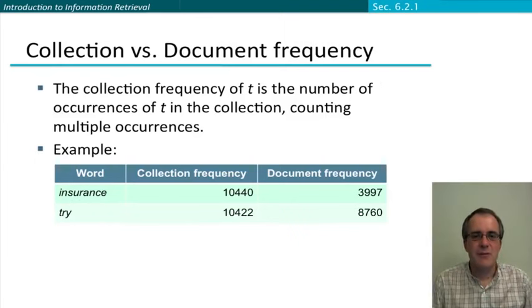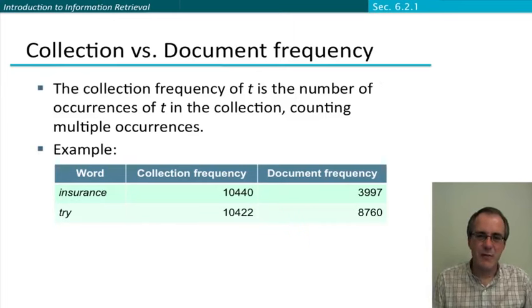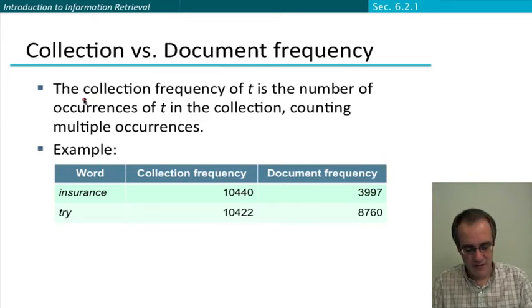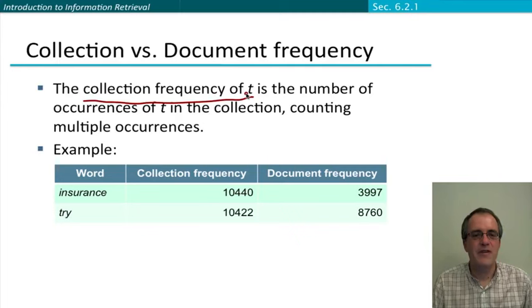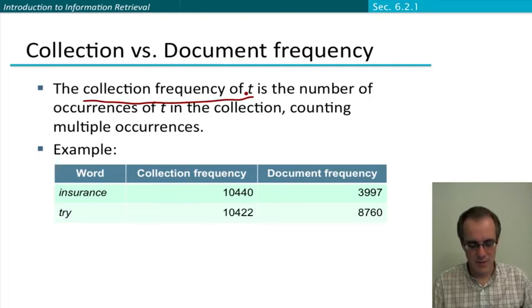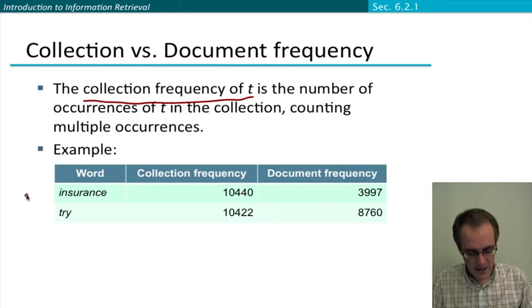There's another measure that reflects the frequency of a term, and indeed you might have been wondering why we're not using it. And that other measure is what information retrieval people refer to as the collection frequency of a term. So the collection frequency of a term is just the total number of times it appears in the collection, counting multiple occurrences. So that's the measure that we've been using in other places.